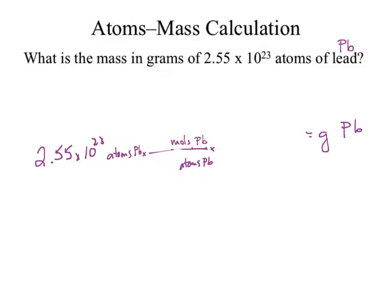What is the relationship between atoms of lead and moles of lead? One mole is 6.022 times 10 to the 23rd atoms of lead. Atoms of lead cancel, leaving moles of lead. Is that what I want for an answer? No.